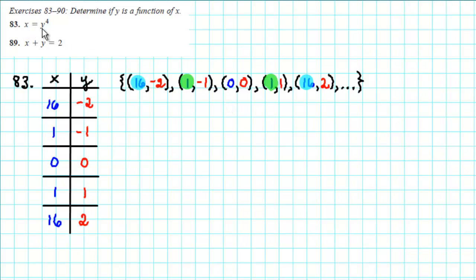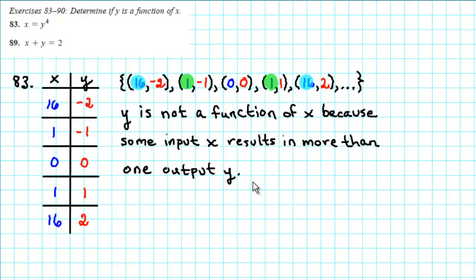Therefore, x equals y to the fourth does not represent y as a function of x. Y is not a function of x because some input x results in more than one output y.